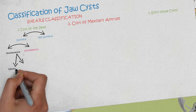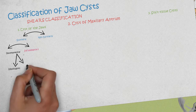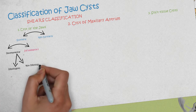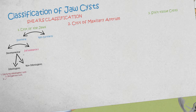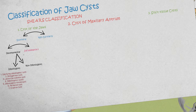The odontogenic cysts comprise: number one, the calcifying odontogenic cysts; number two, the dentigerous cysts; number three, lateral periodontal cysts; number four, odontogenic cysts; number five, odontogenic keratocysts; number six, periapical cysts; and number seven, an eruption cyst.